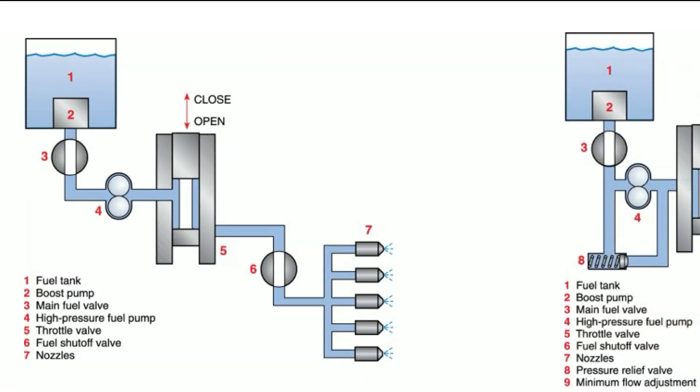We're going to talk about turbine engine fuel controls and dive through a few different iterations. It's easier to understand hydromechanical fuel controls for turbine engines if you look at them as a continued evolution of what we've seen with reciprocating engines. Through this whole class we've started with float carburetors as the most basic, primitive version of fuel metering, increasing complexity through pressure carburetors and fuel injection systems.